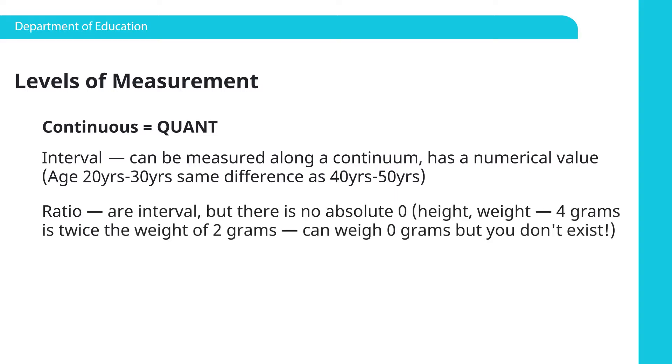Ratio are interval variables, but there's no absolute zero. So, for example, height. How tall you are, as soon as you have height, you have a number. So you can't have height without a number. There's no absolute zero there. Weight is the same. You may ask, why do we care about that? That sounds very complicated. Why do we care about that?